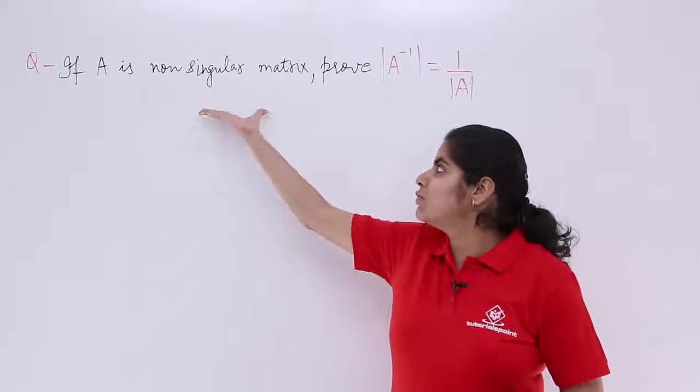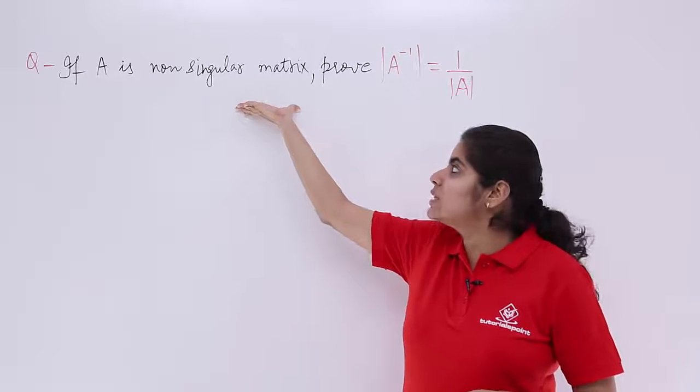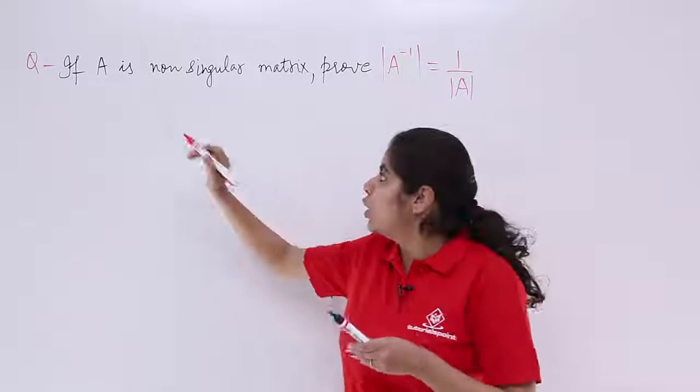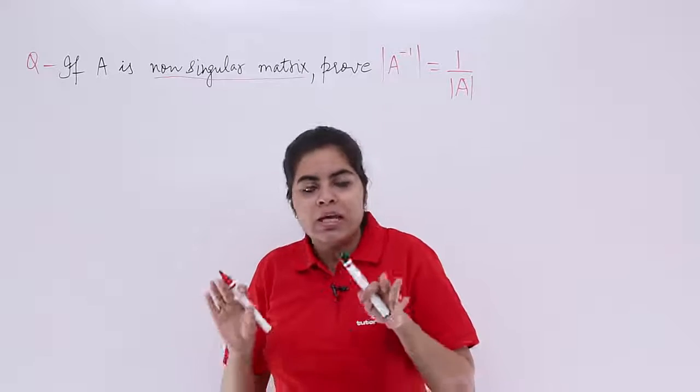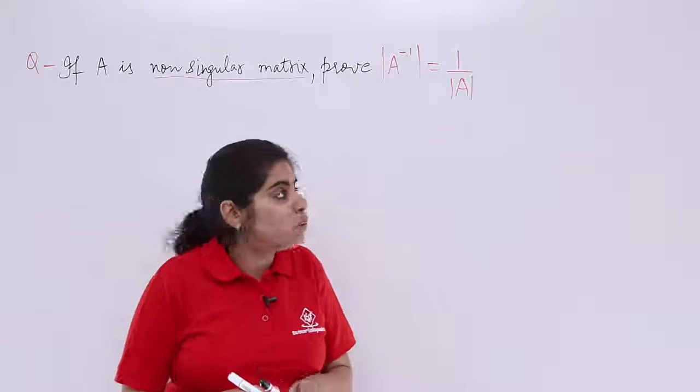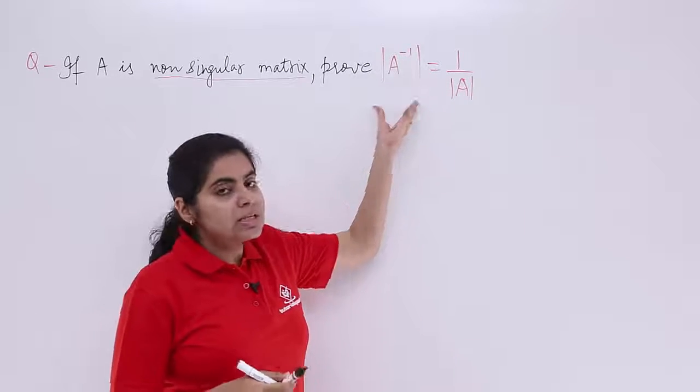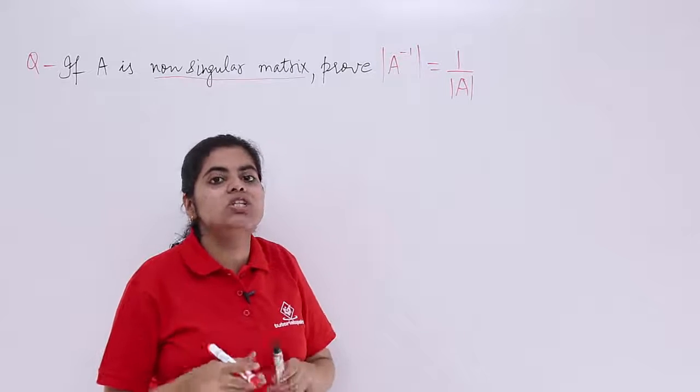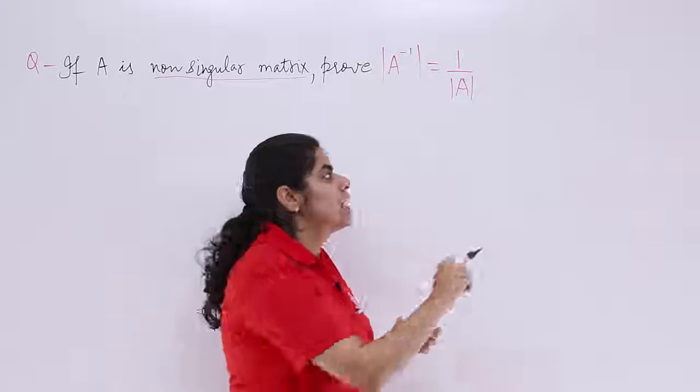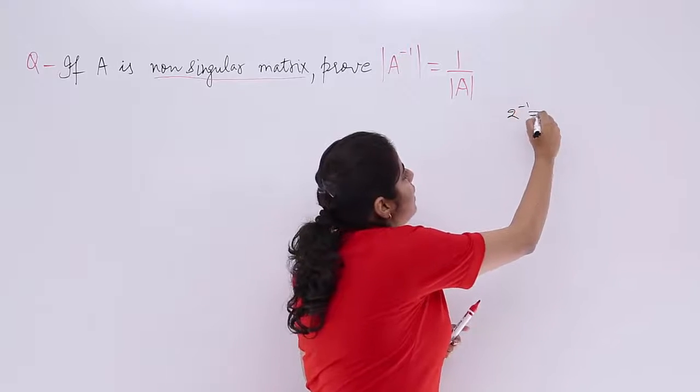we are going to see the second question which says if A is a non-singular matrix. Now, I know non-singular matrix means the determinant value is not equal to 0. That means inverse exists. Prove that |A^(-1)| = 1/|A|. It is as good as if I say 2 inverse is what? It is 1 upon 2.